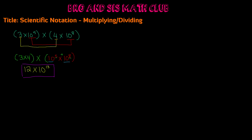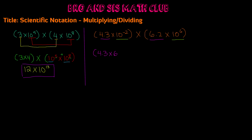Now let's do another example, which is slightly harder. We have 4.3 times 10 to the negative 2 power times 6.2 times 10 to the 6th power. First we need to group these together: our constants are 4.3 and 6.2, and our exponents have the same base — remember, the base is always 10 in scientific notation — so we have 10 to the negative 2 and 10 to the 6th. We write this as 4.3 times 6.2 multiplied by 10 to the negative 2 times 10 to the 6th.